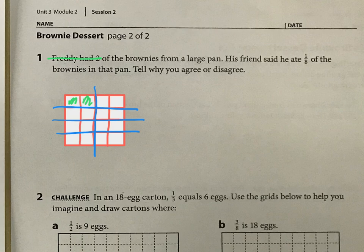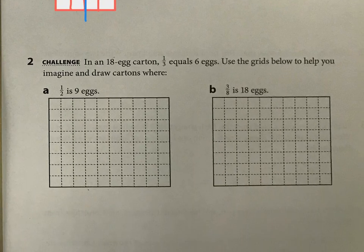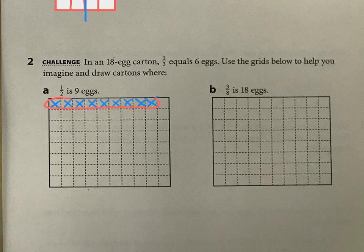And then down here we have similar to what we had before with the egg cartons. So here we have one half is nine eggs. So what does the carton look like? Well, there are nine right there, and that's just one half. So what does the other half look like that would be empty? And then you know how many cartons are in the egg.